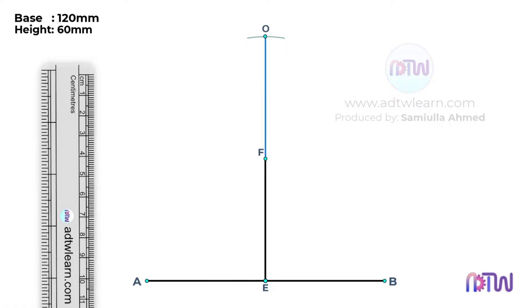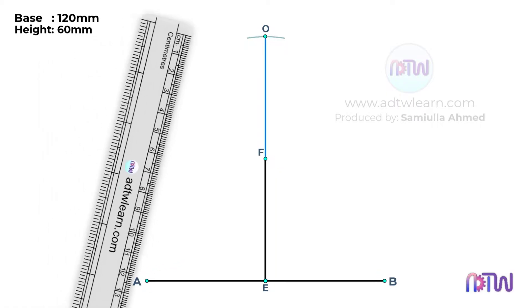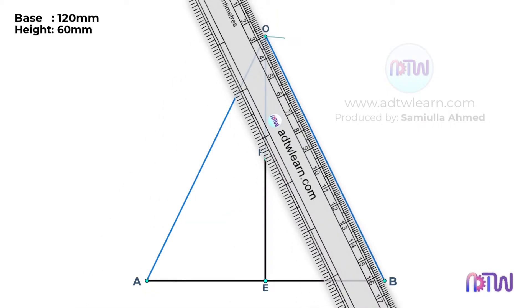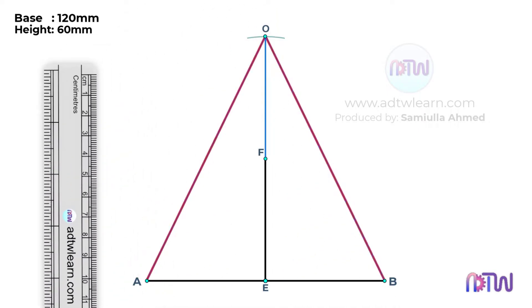After this, we need to draw lines joining point O and A, and point O and B. We need to divide these two lines into some parts. You can divide them into any number of parts as you wish. In this video, I will be dividing it into 8 equal parts.